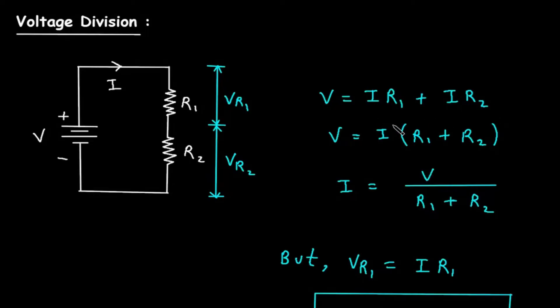Now, here we can take I common, so V is equal to I into R1 plus R2. From this, we can say I is equal to V divided by R1 plus R2.